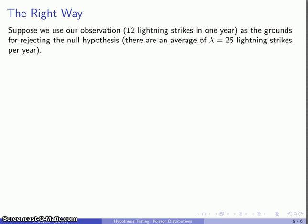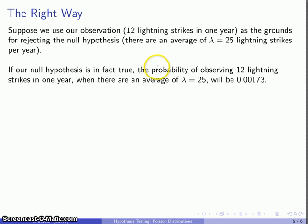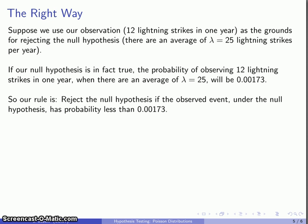Suppose we use our observation as the grounds for rejecting the null hypothesis that there are an average of 25 lightning strikes in one year. What this means is that we deem this event — 12 per year — as too improbable to occur if the null hypothesis is true. If the average number of lightning strikes is in fact 25, the probability of observing just 12 is about 0.00173. We have now set our level: this is too improbable, and that means anything less probable than that we would also consider as grounds for rejecting our null hypothesis.